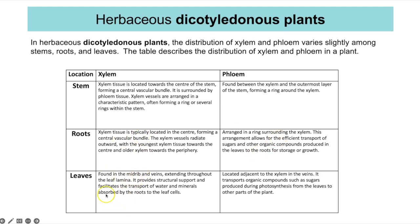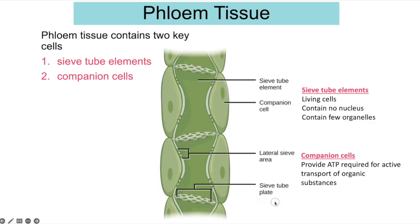In the leaves, xylem is found in the midrib and veins, extending through the leaf lamina. It provides structural support and facilitates transport of water and mineral ions absorbed by root hair cells to the leaves. The phloem is located adjacent to the xylem in the veins and transports organic compounds such as sugars produced during photosynthesis from the leaves to other parts of the plant.